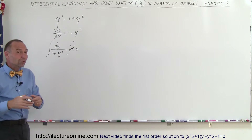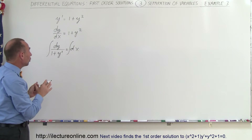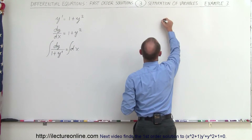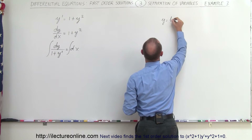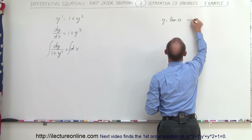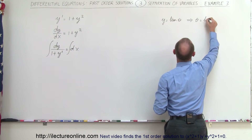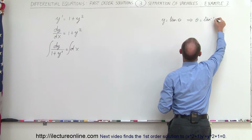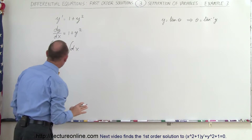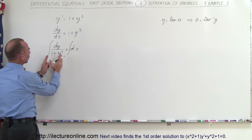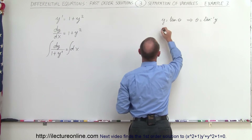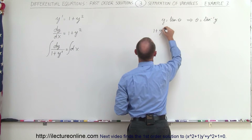Well, either you memorize that verbatim, or you can make a trick substitution. We can say that y is equal to the tangent of theta, such that theta is equal to the arctangent of y. Now, if we do that, we look at 1 plus y squared and use our trigonometric replacement.